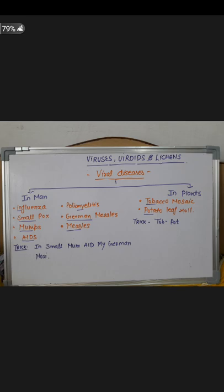Now we will talk about viral diseases. In humans, viral diseases include Influenza, Smallpox, Mumps, Poliomyelitis, and German Measles. Please like and subscribe as I try to explain the concept clearly.